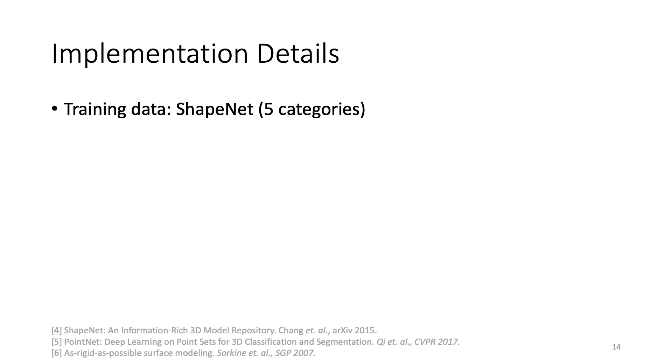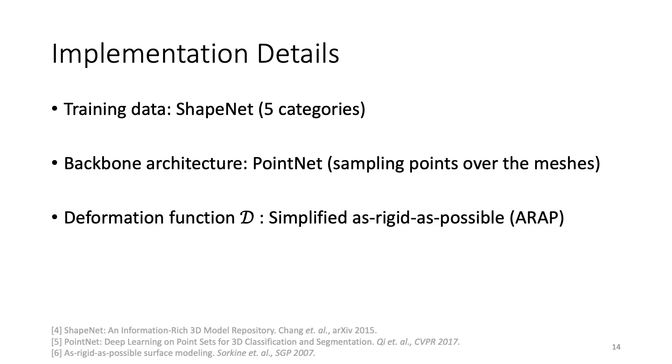We use the ShapeNet dataset to generate our source-target pairs for training. We trained and tested on five object classes, namely tables, chairs, sofas, cars, and planes. Moreover, we use the PointNet backbone architecture, and we sample points over the meshes to obtain point clouds as network inputs. For our deformation function D, we use a simplified version of the ARAP deformation. Please see our paper for more details. We use the same deformation function and compare our approach with other retrieval baselines.